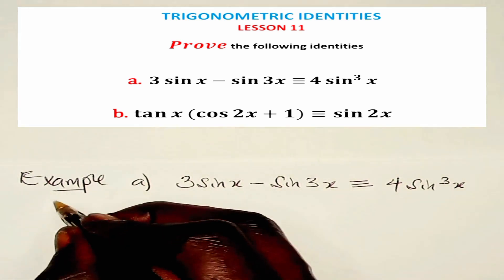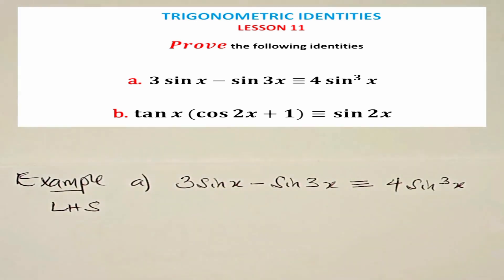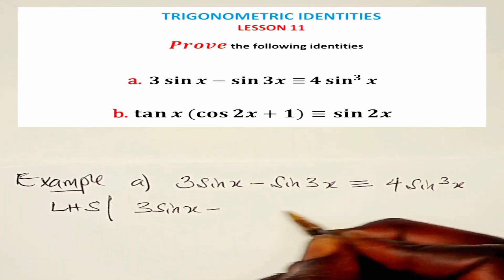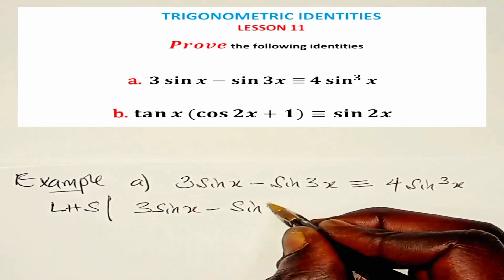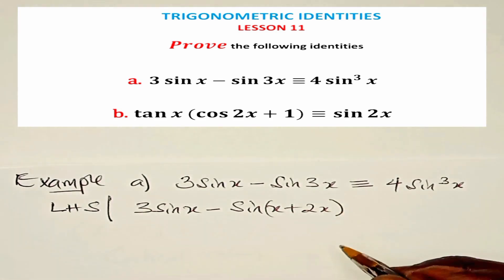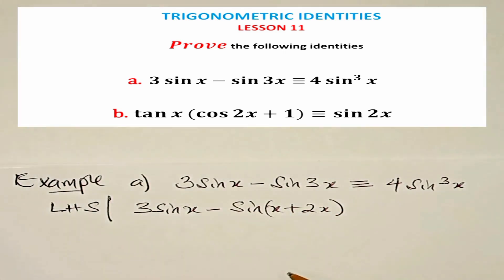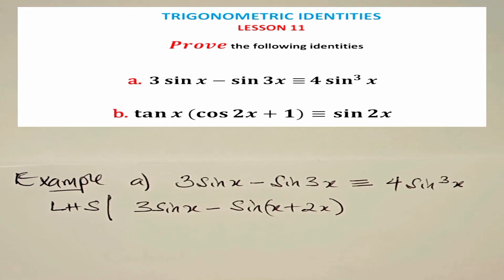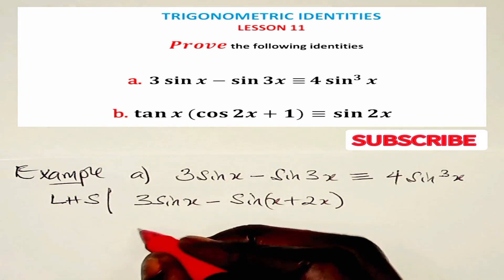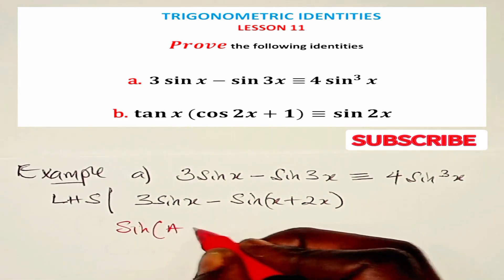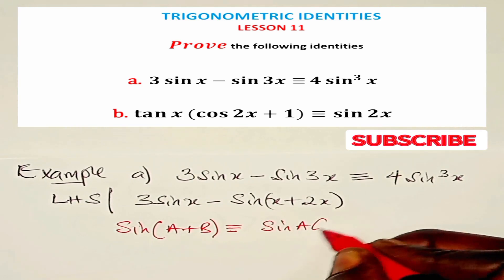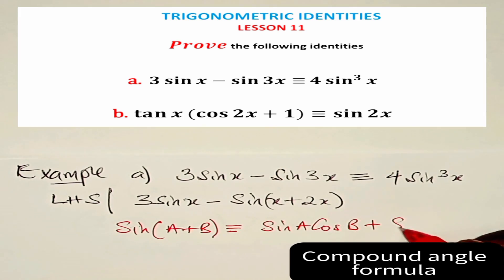Now let's consider the left hand side of this identity and we shall rewrite it as 3 sine x minus sine(x + 2x). We have just split 3x into x plus 2x, and on this term we shall use the compound angle formula for sine, which is: sine(a + b) is identical to sine a cos b plus sine b cos a.